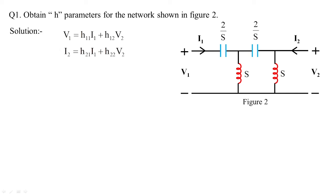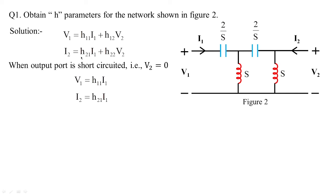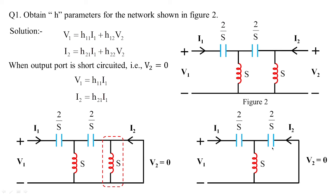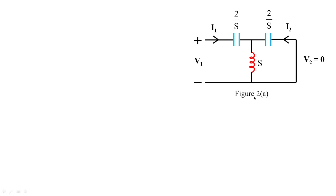The h parameters are given by the same two standard equations. When the output port is short-circuited (v2 = 0), we obtain h11 and h21. This is how the circuit changes from Figure 2 to Figure 2a when v2 = 0 — the shorted terminal is removed and the reduced circuit Figure 2a is obtained.